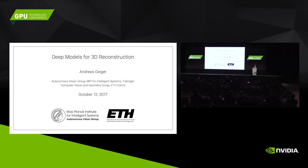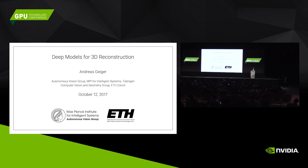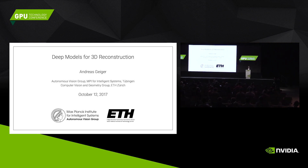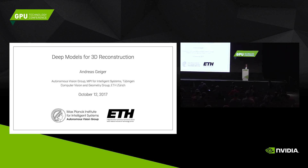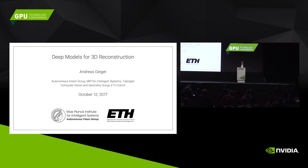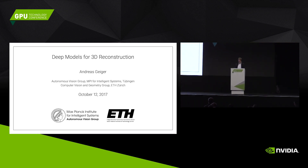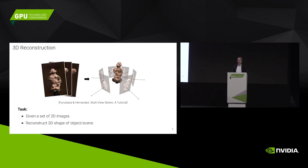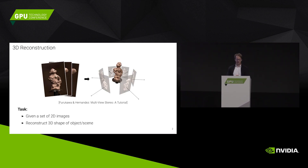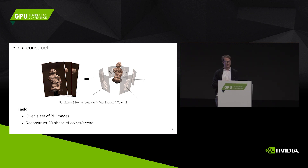Today I'm going to talk about one of the most fundamental problems in computer vision: 3D reconstruction, which I got very excited about recently, and in particular how we can use deep learning technology to improve on what we have so far. 3D reconstruction is the problem of giving a set of 2D images that depict an object or scene to reconstruct the 3D shape of that object or scene.